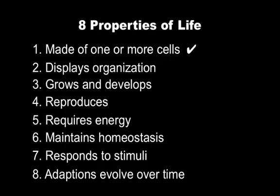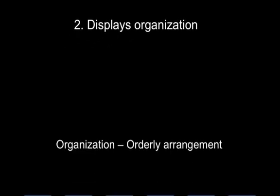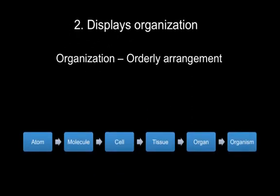Next, organisms must display some form of organization. Think about a house — there are different rooms for different purposes: the kitchen is used to make food and the bedrooms for sleeping. Life is no different. Life is organized on several different levels: atoms form molecules, which form parts of cells. These parts perform specific tasks such as providing energy or storing genetic code. These form cells, and in multicellular organisms cells form tissues. Tissues form organs, which have specific roles such as the heart for pumping blood or the stomach for digestion. All life has some form of organization from small to large.